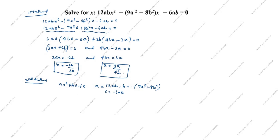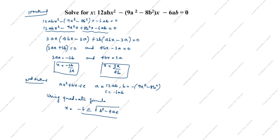Using the quadratic formula: x equals minus b plus or minus root of b² minus 4ac, all divided by 2a.